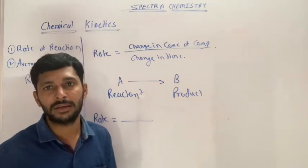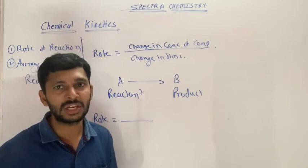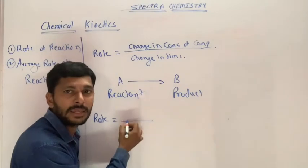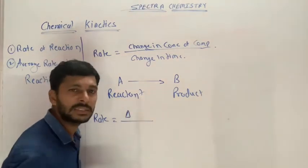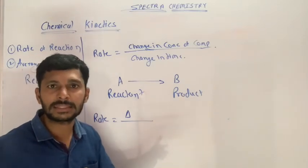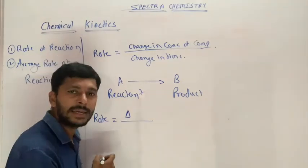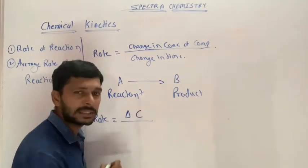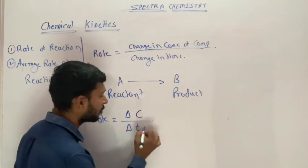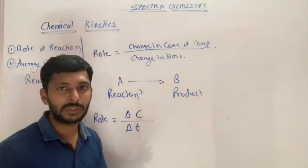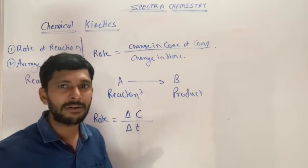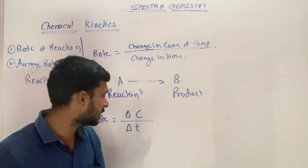The change in concentration — we normally use the symbol delta (capital delta Δ). If we have a change in concentration, there is a difference — we use C for concentration and Δ for the difference. There is a time when the reaction starts and a time at a particular level, and the difference between those times is delta t.